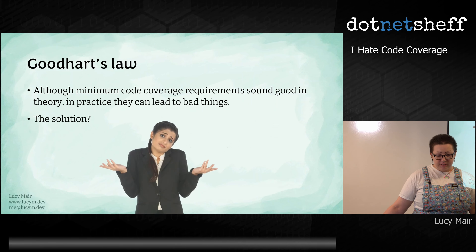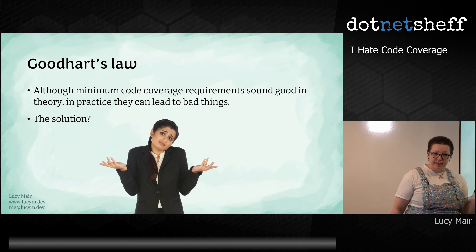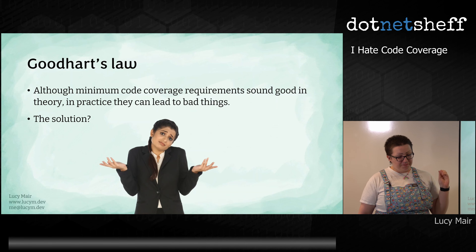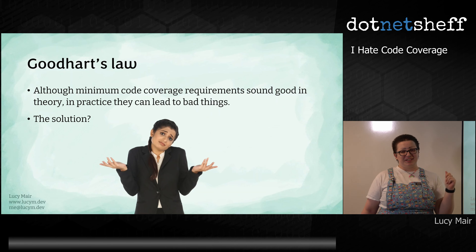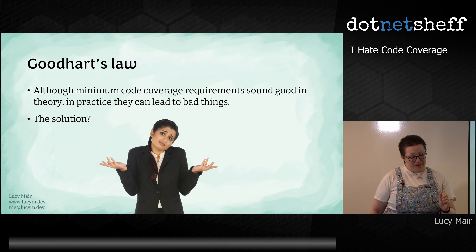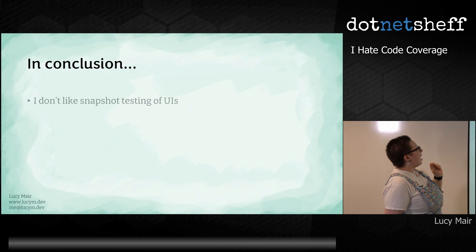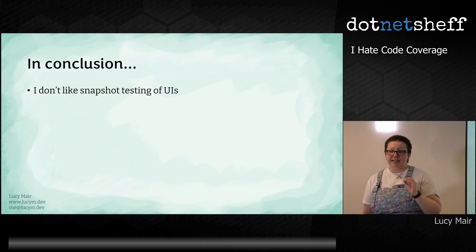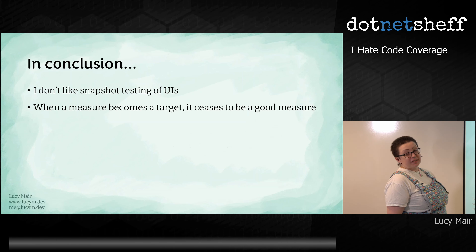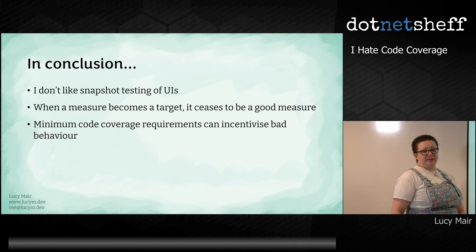What's the solution to this? I don't really know. Conveniently, I'm out of time because it's a lightning talk, but I promise if this was the longer slot I would have gone into so much detail. Just beware if you're relying too heavily on your code coverage numbers to tell you whether your code is good or bad. And if you do have any good solutions to this, please come and find me in the pub later. In conclusion: I really don't like snapshot testing of UIs — do not do it, it is bad. When a measure becomes a target, it ceases to be a good measure, said by someone called Goodhart apparently. And minimum code coverage requirements can incentivize bad behavior.